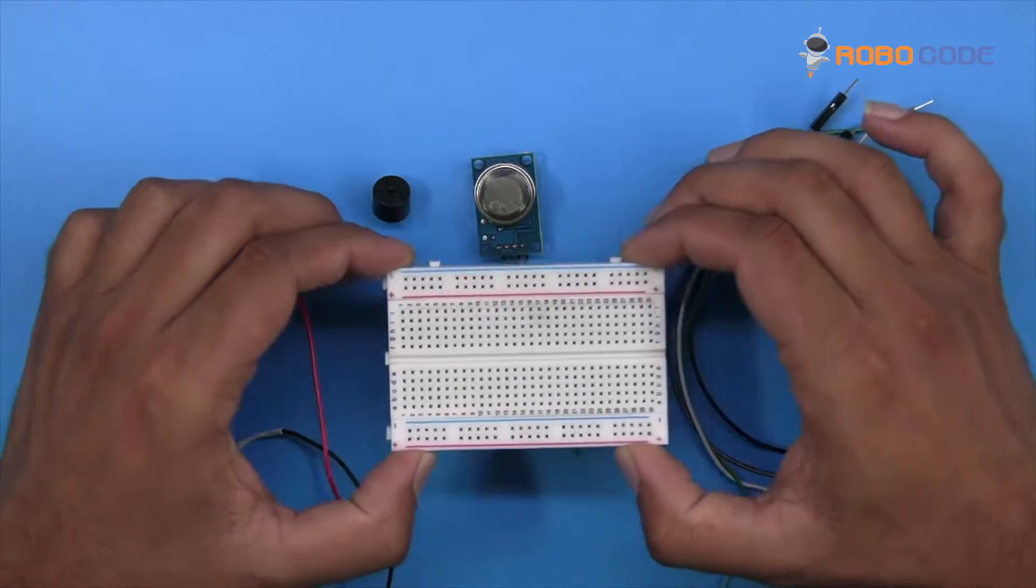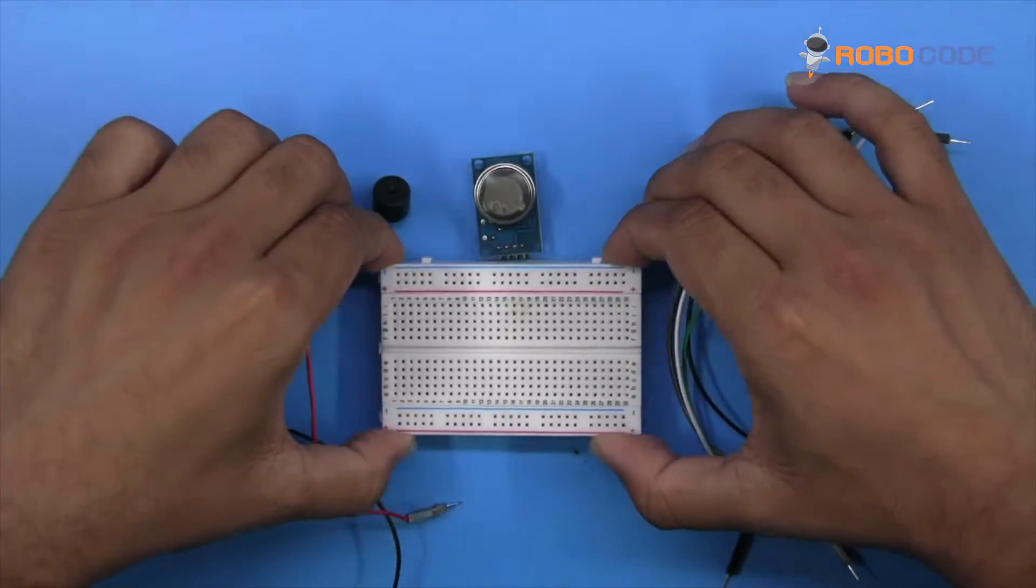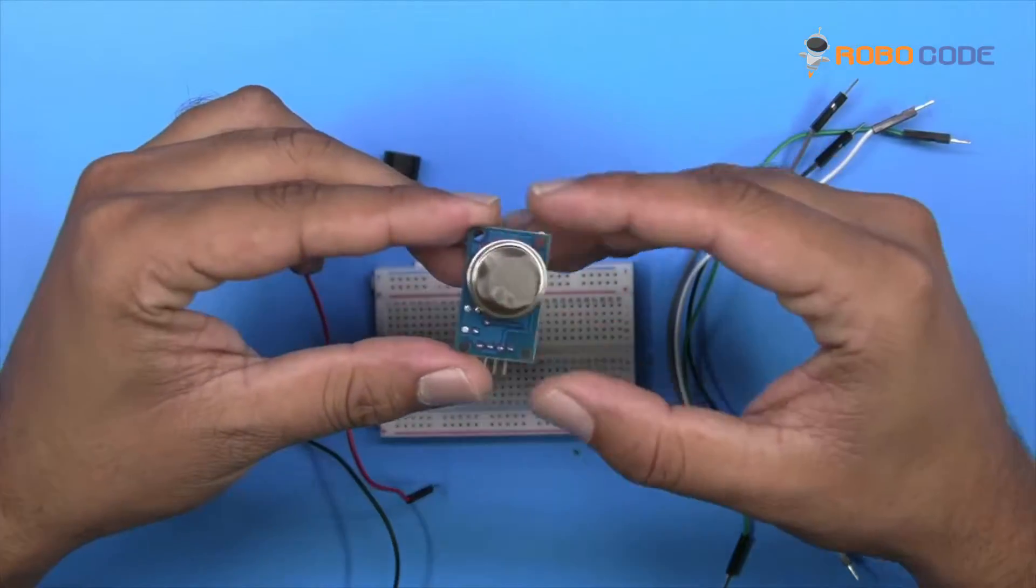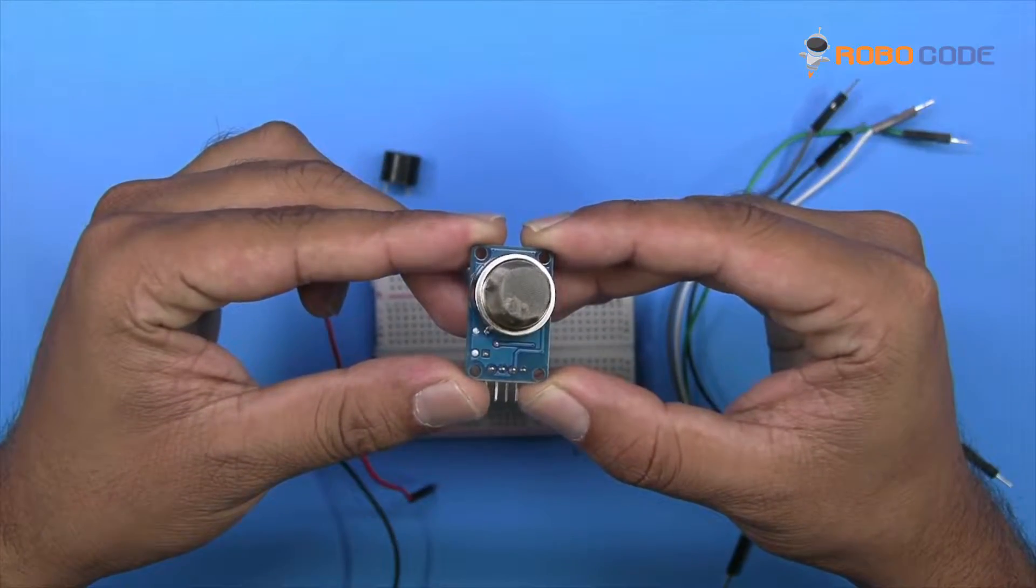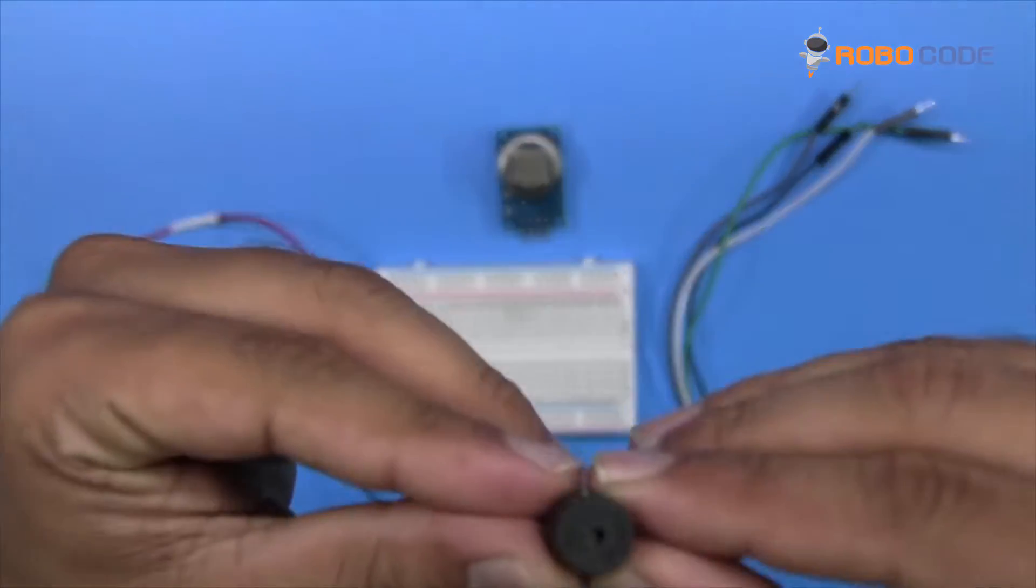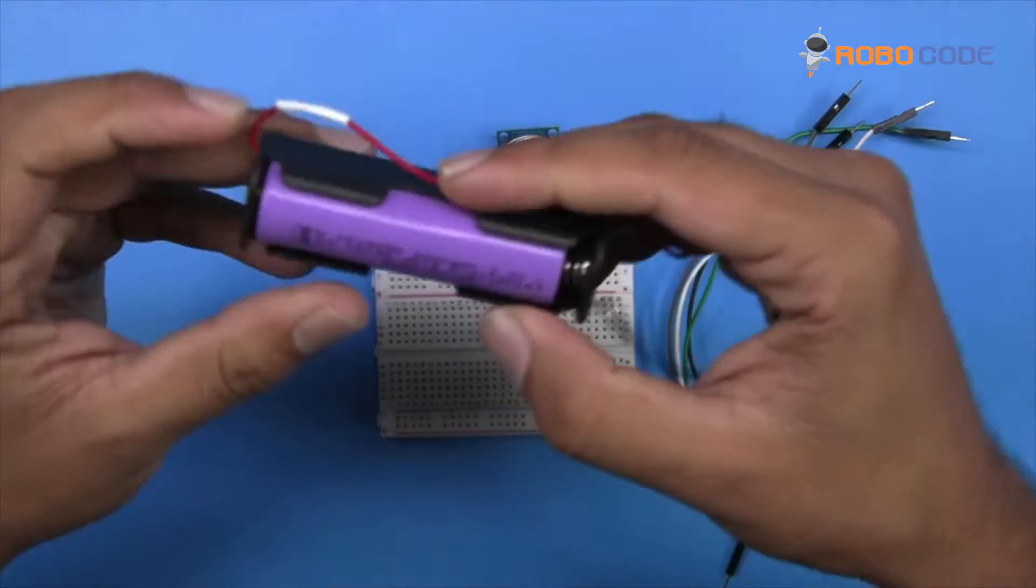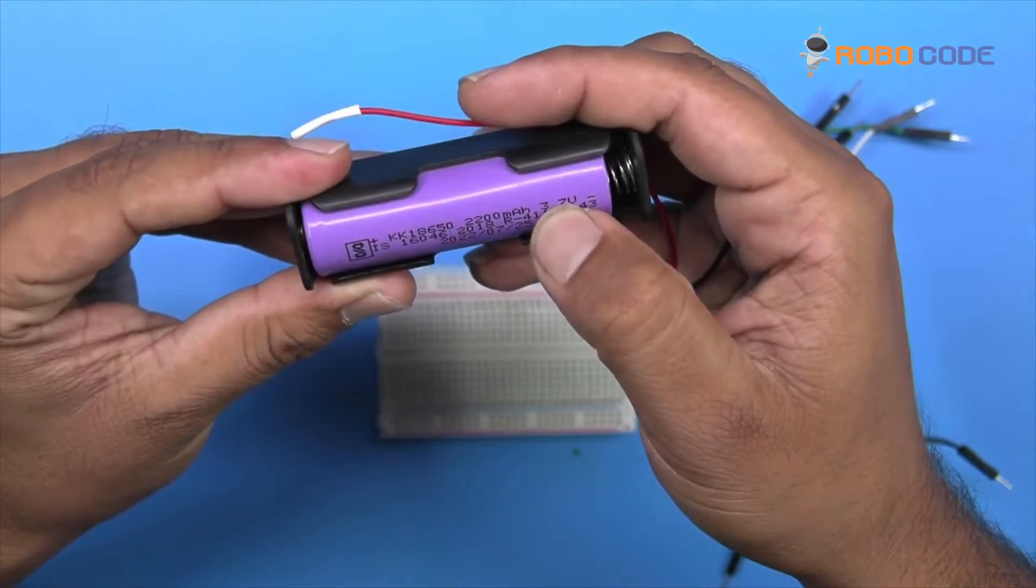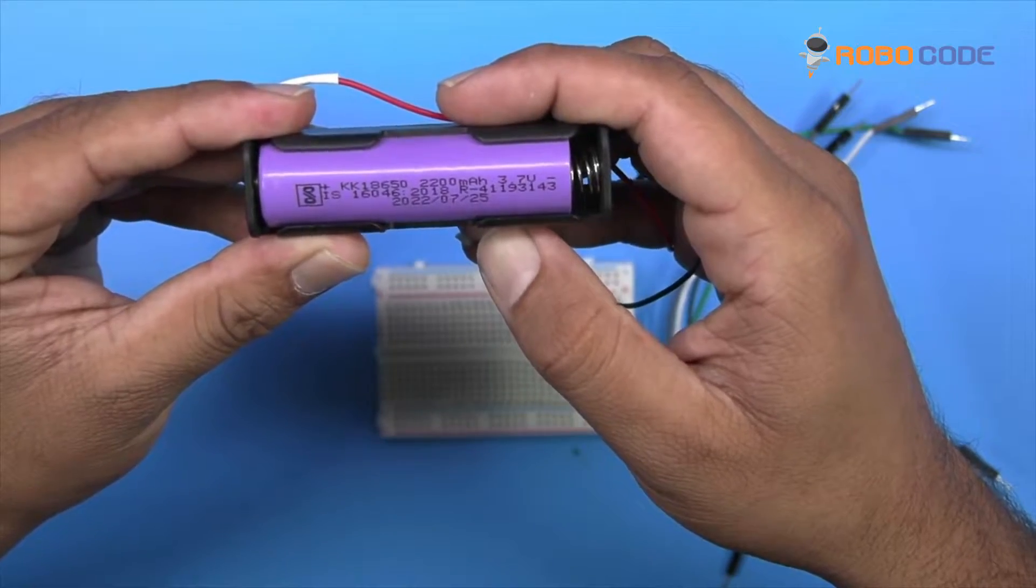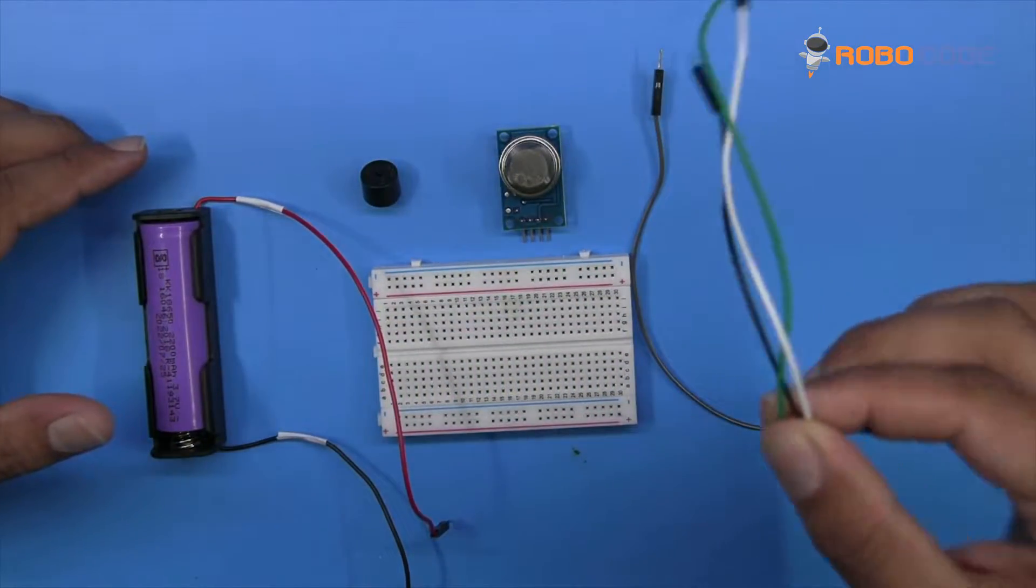In this tutorial, we would require one breadboard with 400 pins, as you can see in this video, one MQ2 gas sensor, one buzzer, and a single battery holder with lithium battery of 3.7 volt and a few male to male jumper wires.